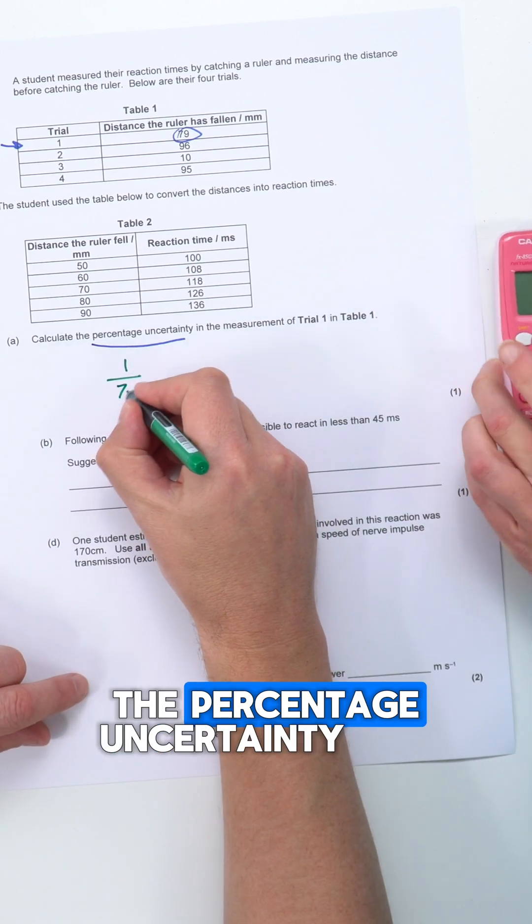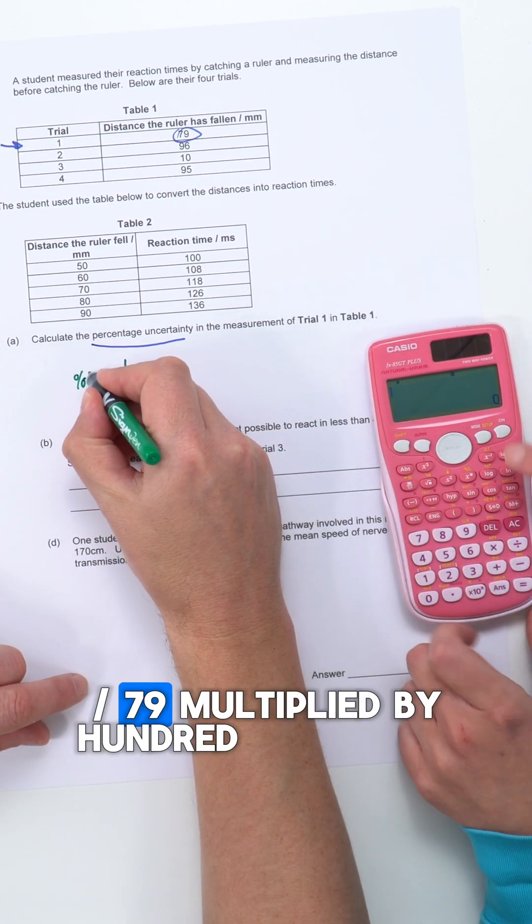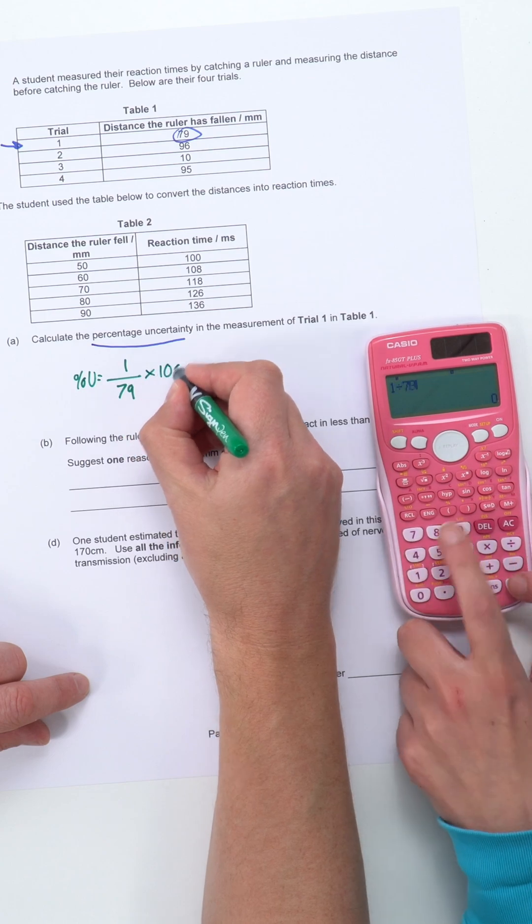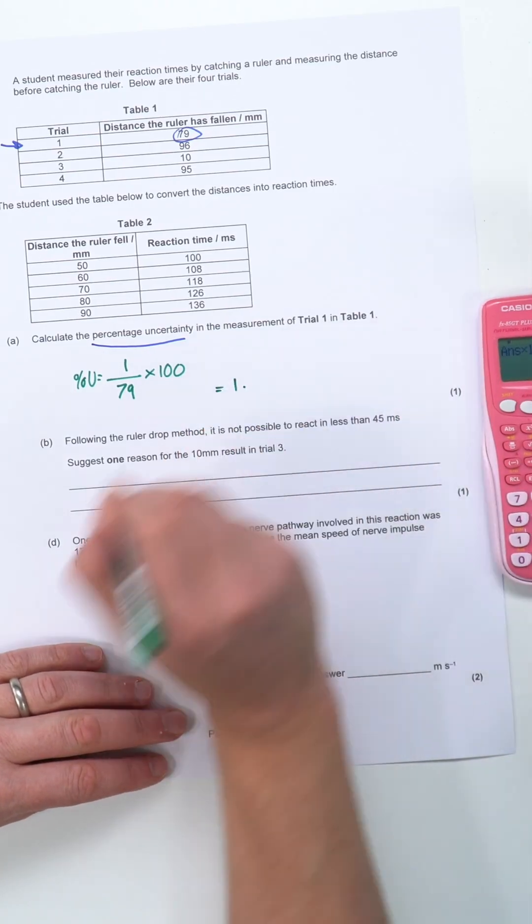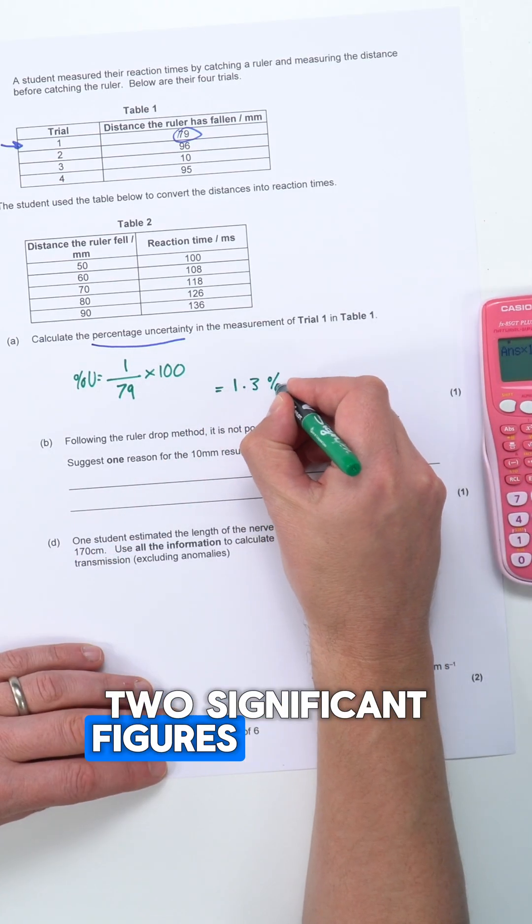And to work out the percentage uncertainty, this is going to be equal to one divided by 79 multiplied by 100. That gives us 1.2658, and I'm going to give that as 1.3 percent, so I'm just going to give my answer to two significant figures which I think is appropriate.